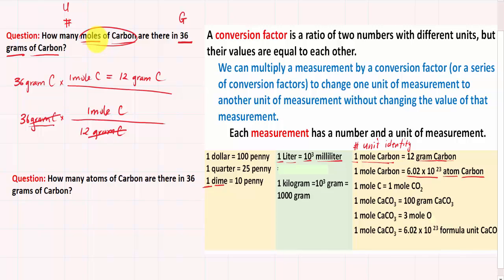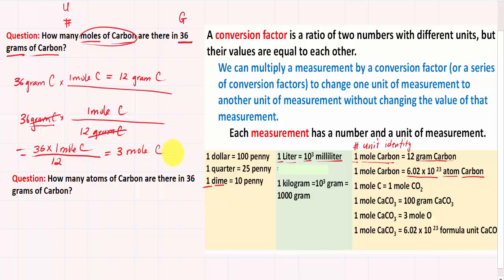Let's simplify. We multiply all the numbers on top — 36 times 1 mole of carbon — then divide by everything on the bottom, which is 12. Notice I don't write grams of carbon because it's been cancelled out. Plugging into the calculator: 36 times 1 divided by 12 gives us 3 moles of carbon. So the value of 3 moles of carbon has the same value as 36 grams of carbon.